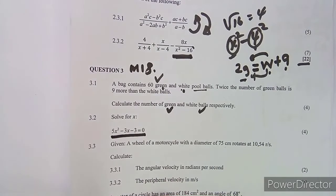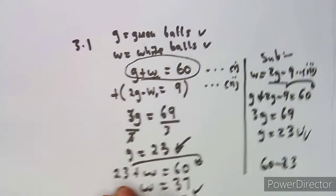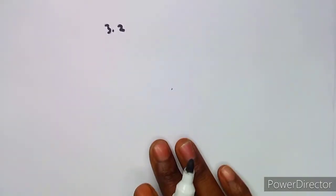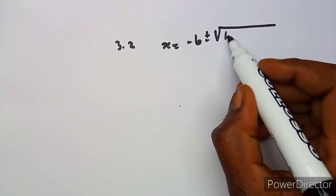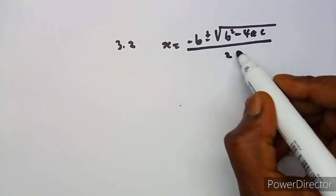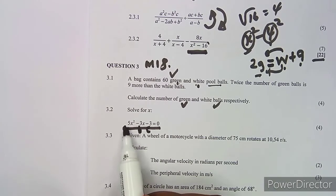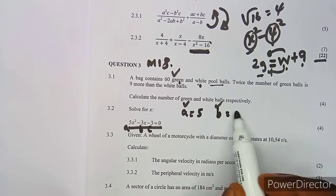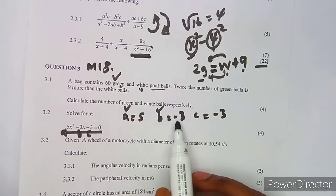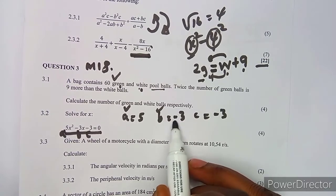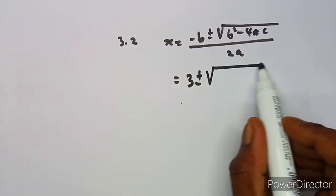For question 3.2, we have a quadratic equation. We apply the quadratic formula: x = (−b ± √(b² − 4ac)) / 2a. Identifying the coefficients: a = 5, b = −3, and c = −3.